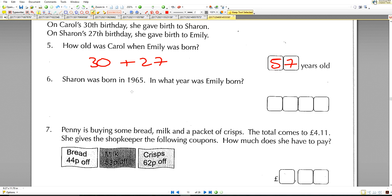Sharon was born in 1965. In what year was Emily born? Emily was born on Sharon's 27th birthday, so 1965 add 27, and that will give us an answer of 1992.